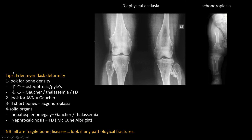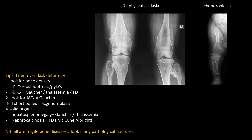To recap: first look at bone density — increased or decreased. Look for avascular necrosis that may indicate Gaucher disease. If there are short bones, consider achondroplasia. Look for other available radiographs: abdominal X-ray for hepatosplenomegaly in Gaucher or thalassemia, nephrocalcinosis in fibrous dysplasia, and don't forget to look for pathological fractures in all these cases.